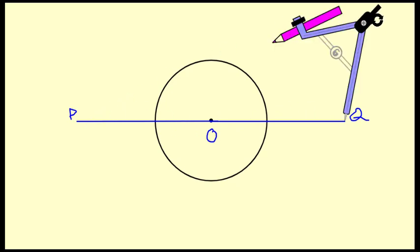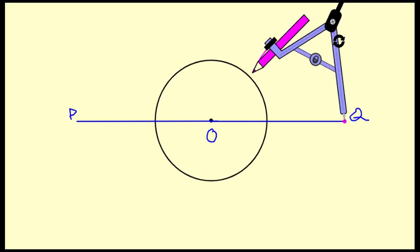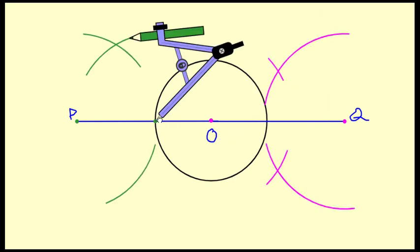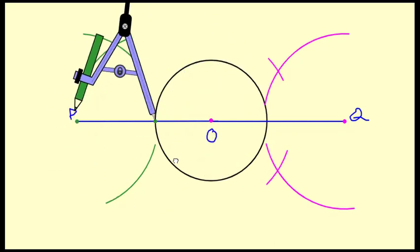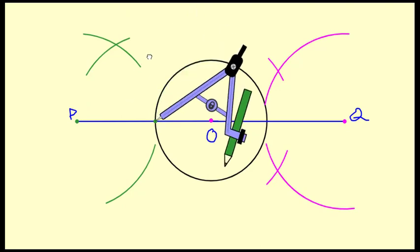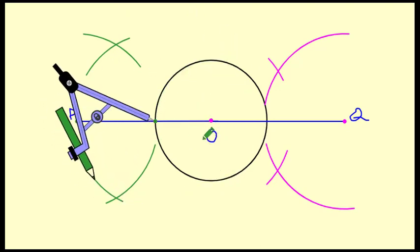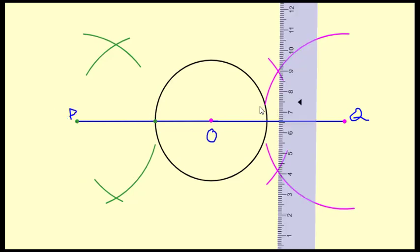I've taken the arc more than half the length of OP. Now I'll draw an arc and construct the perpendicular bisectors of OP and OQ. Here is the perpendicular bisector of OQ, and now I'll draw the perpendicular bisector of OP as well.